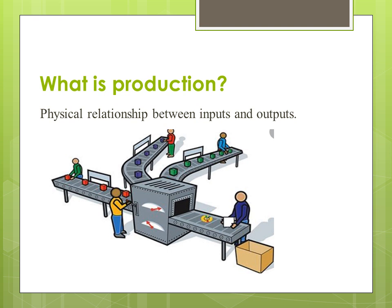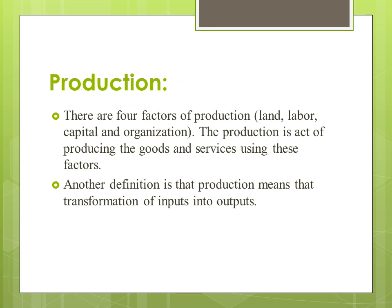When talking about new classical economists, they said that production depends on both inputs — labor and capital. It also depends upon natural resources and technology. There are four factors of production: land, labor, capital, and organization. Production is the act of producing goods and services using these factors to achieve output. Another definition: production means the transformation of inputs into outputs.